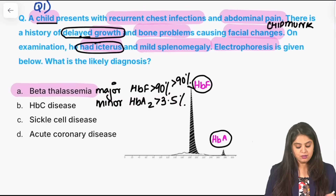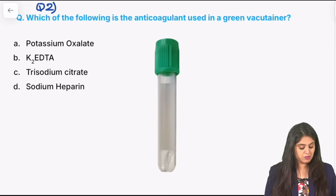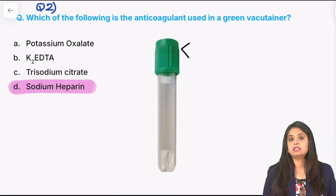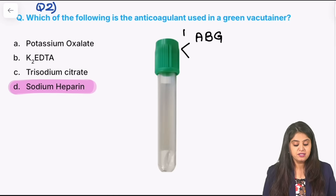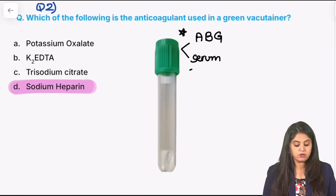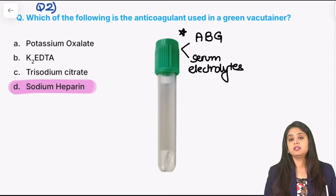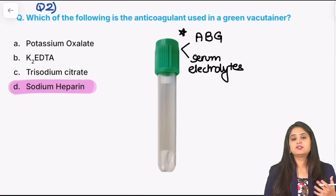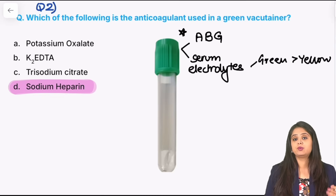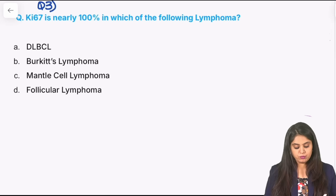Moving on to question two — a recent exam question about the anticoagulant used in the green vacutainer. We've always learned: green is Hara, and Hara is heparin. But recently they asked what procedures can be done in a green vacutainer. Number one: arterial blood gas analysis in the anesthesia department. Number two: serum electrolytes — as per the textbook, serum electrolytes should be collected in the green vacutainer. If green is not available, you go for yellow. In the exam, always mark what is written in your standard textbook — green first, then yellow.